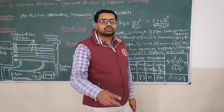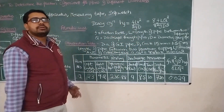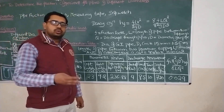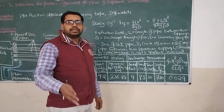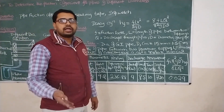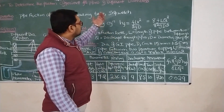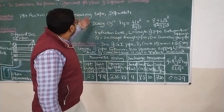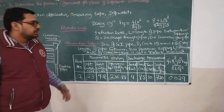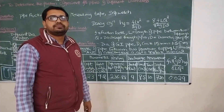This friction coefficient of 0.029 corresponds to the 15 mm pipe. Similarly, you can take a number of readings and repeat the procedure for different pipes, and find out the friction coefficient for different pipe diameters by the same process. Thank you.